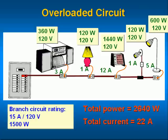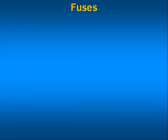In this chart, an overloaded circuit is shown. The circuit is designed to deliver 1500 watts to the loads, but 2600 watts of loads have been connected to the circuit. The protective fuse or circuit breaker should break the circuit and block the flow of current.